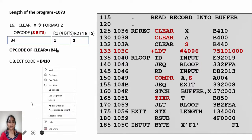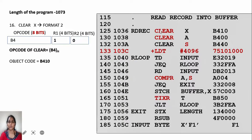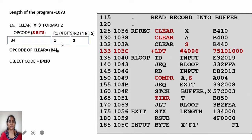The next instruction is CLEAR X, which is a format 2 instruction. The opcode of CLEAR is B4, and you have to clear register X. The value of X register is 1. Opcode is written as 8 bits, so there is no change compared to format 3 or format 4 instructions. Opcode B4 followed by R1 value 1 and R2 value 0, giving object code B4 10.